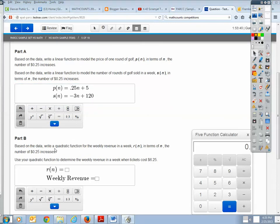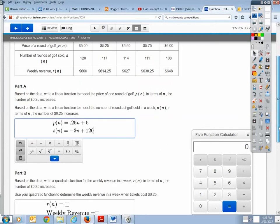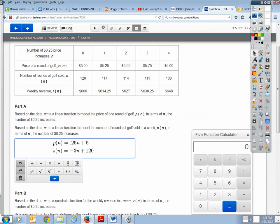Part B. Based on the data, write a quadratic function. I knew that was going to come. Write a quadratic function for the weekly revenue R(n) in terms of N. So let's talk about, really quickly, just logically, what is weekly revenue? Well, weekly revenue is going to be equal to the cost of a round of golf, so that's P(n), times the number of rounds. So in other words, $5.25 times 117 is equal to $614.25. Likewise, $6 times 108 is equal to $648. So essentially, I'm taking P(n) and I am multiplying it by S(n).